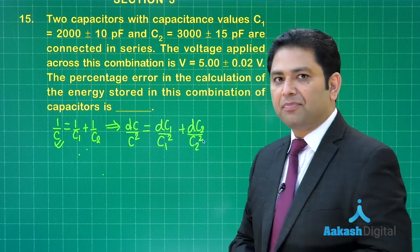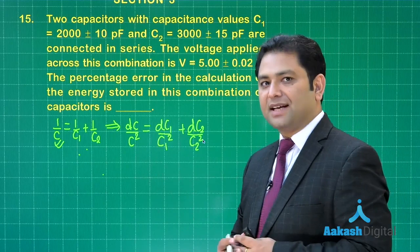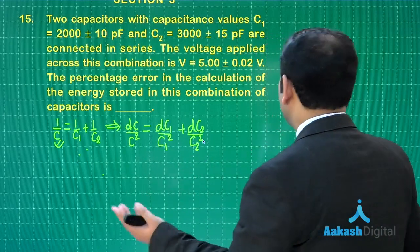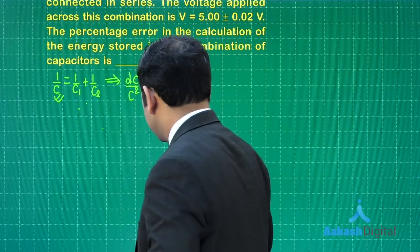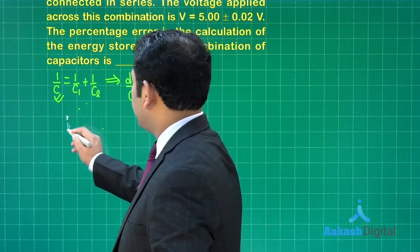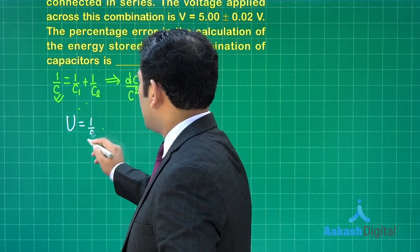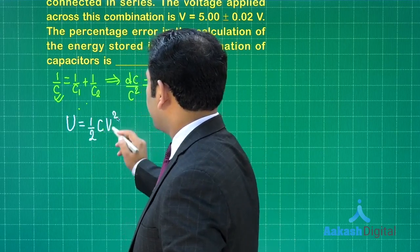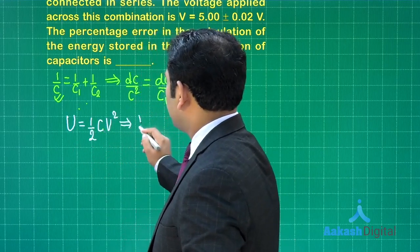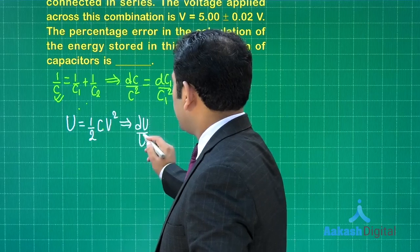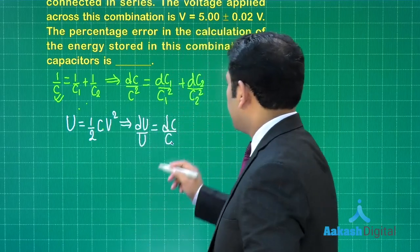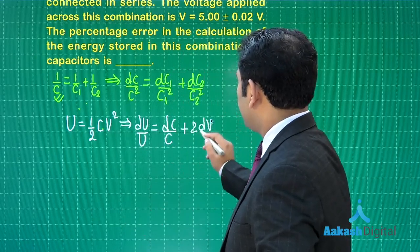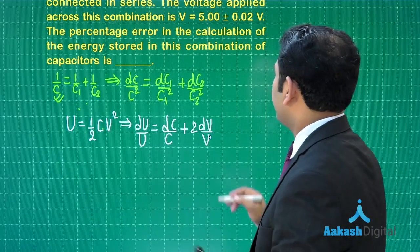Now talking about the energy, if I see the value of energy is one half of CV², and this further will give me dU by U is dC by C plus twice dV by V. So all set, everything is there.